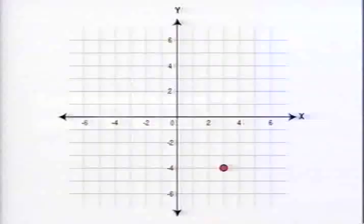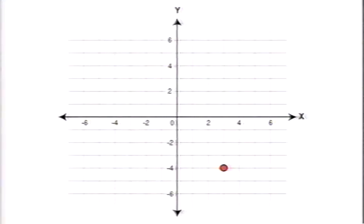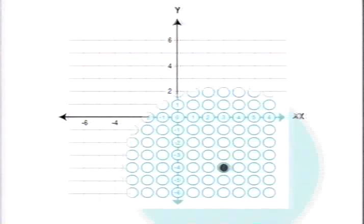For example, if the answer for a question was 3, negative 4, this point would be filled in.